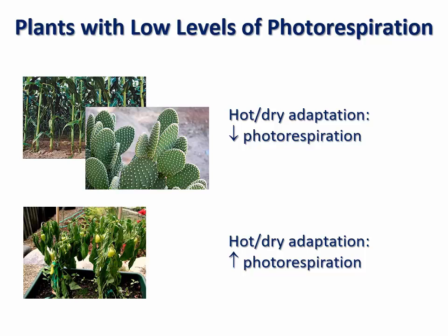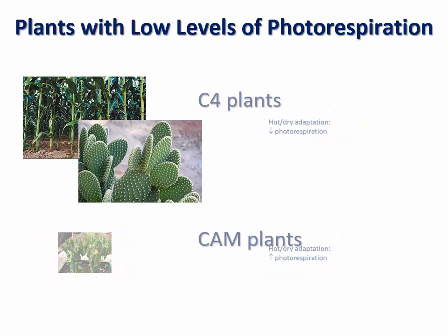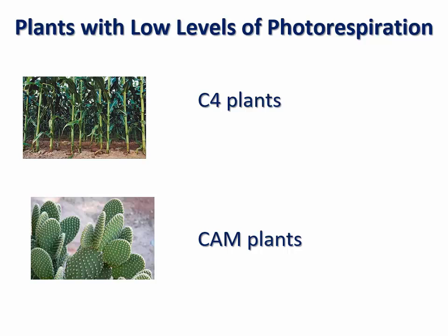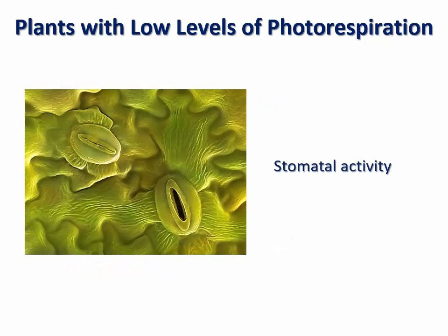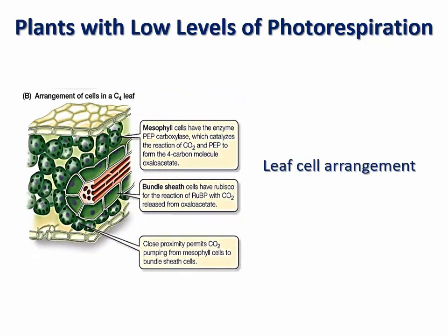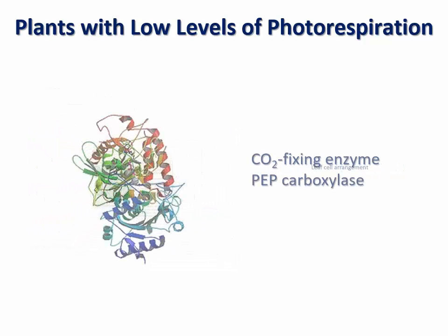There are two major types of plants that experience extremely low levels of photorespiration when it is dry or hot: the C4 plants and the CAM plants. Three key factors are behind the coping mechanisms of C4 and CAM plants: first, the opening and closing daily activities of their stomata; second, the way photosynthetic cells are arranged in their leaves; and third, in addition to Rubisco, these plants possess a second enzyme involved in carbon dioxide fixation.